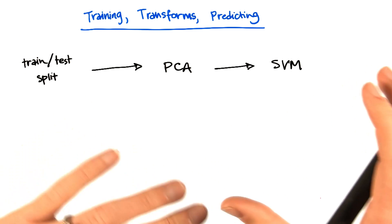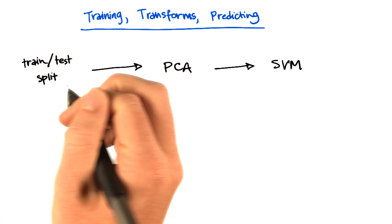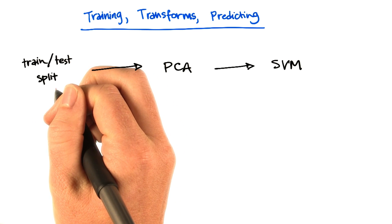Suppose that your overall analysis flow looked something like this. You start out by splitting your overall data into training and testing sets.